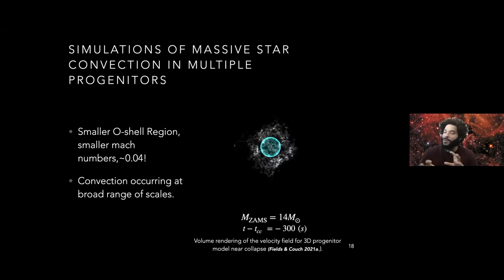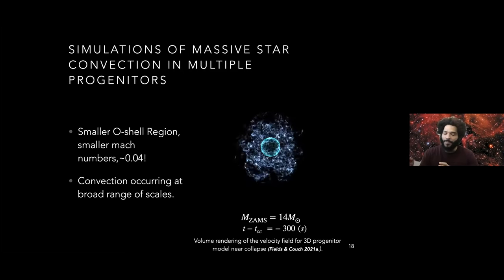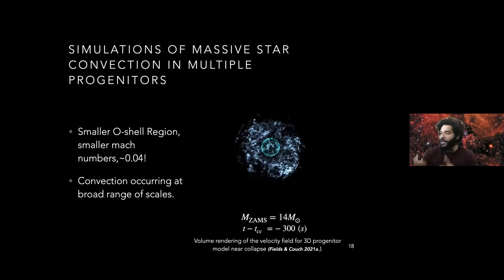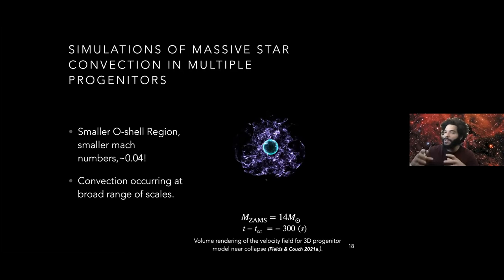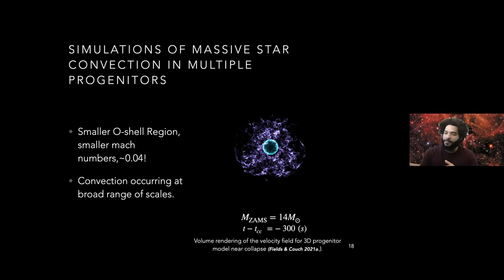We ran a 14 solar mass model showing the magnitude of the velocity field with the iron core in the center, oxygen shell burning above it, and a thin silicon shell below. The oxygen shell is very convectively active — speeds increase as the core starts to collapse. This model actually had the weakest convection in the grid, with Mach numbers around 0.04. Even so, taking into account these non-radial features and this broad range of convective scales paints a positive picture for explosion.